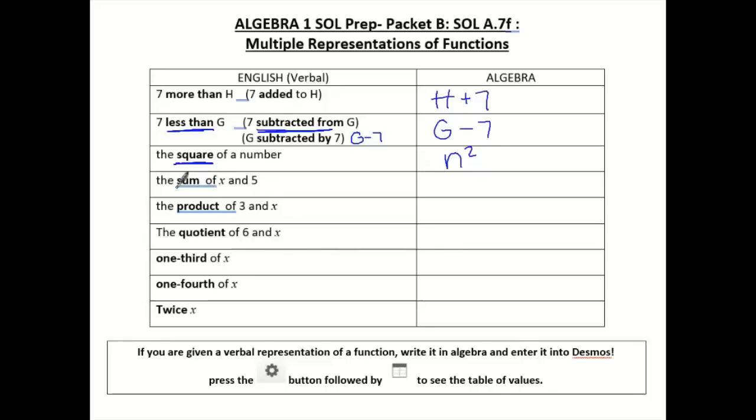The next one says the sum of, if we have the sum of X and 5, we are adding together X plus 5. The product of 3 and X, we can just write 3X.